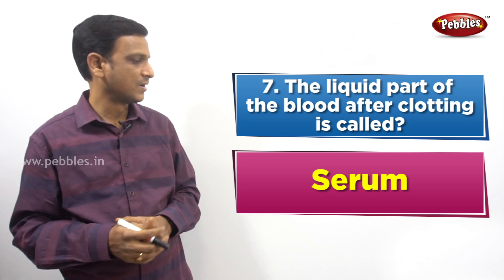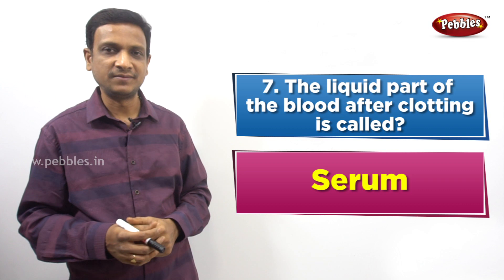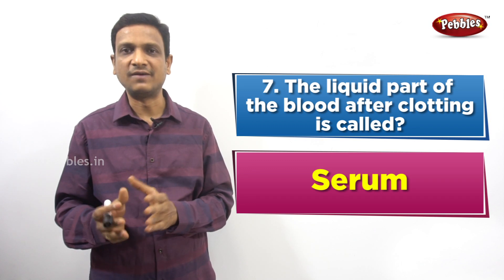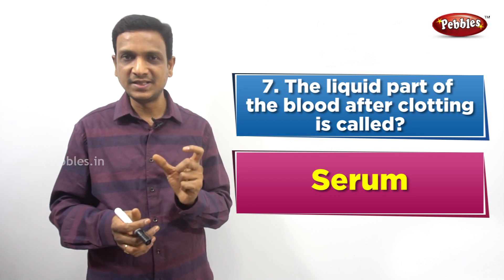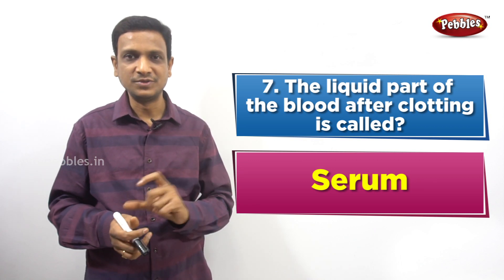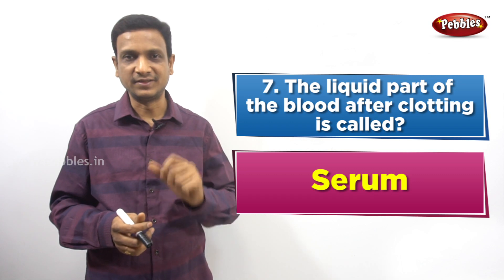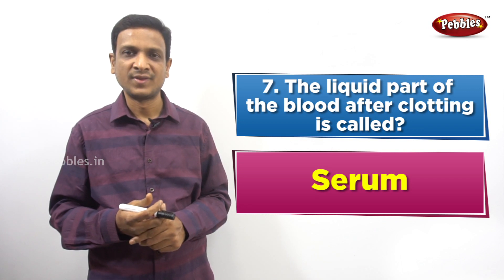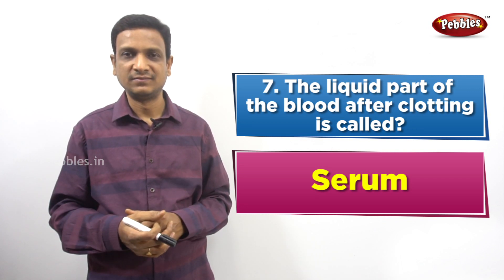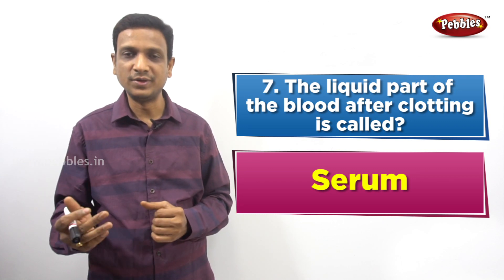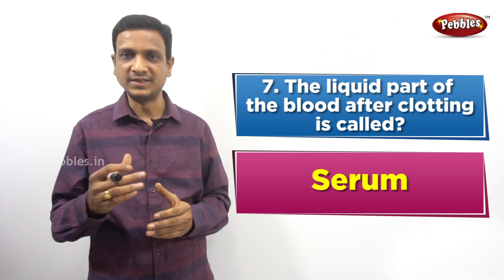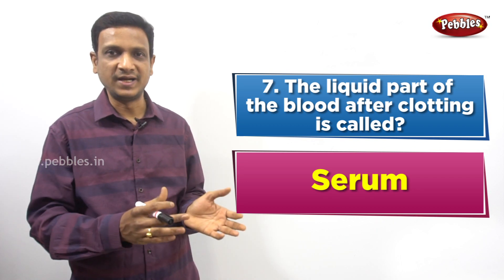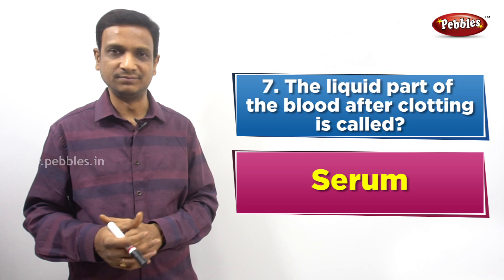So what is the difference between serum and plasma? Plasma is the liquid part of blood without clotting. Serum is the liquid part of blood after clotting. There is a compositional difference: plasma has more proteins compared to serum. Serum is missing some proteins because those proteins are used in the process of clotting. So the answer to question 7 is serum.